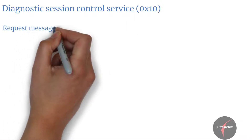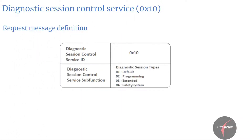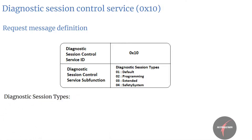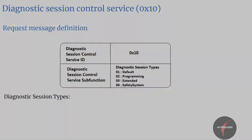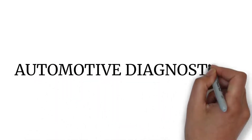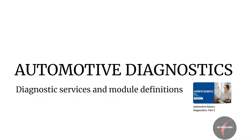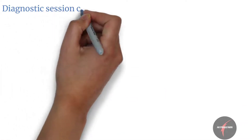Let's now look into the request message definition. In the request we have two parameters: Diagnostic Session Control SID, which is mapped to value 0x10, and sub-function, which is mapped to diagnostic session types. In the last video we had a look into important definitions used in diagnostic services. Now let's get into details of our first diagnostic service — Diagnostic Session Control, service 0x10.